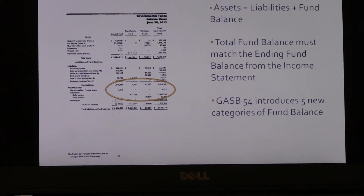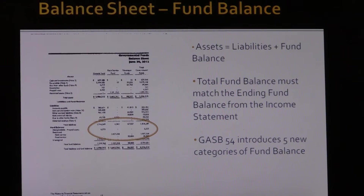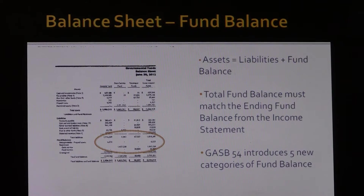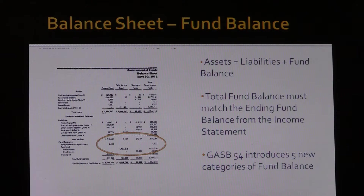This is an example of an annual audit of the combined governmental balance sheet. It shows all the assets, liabilities, and fund balance for each governmental fund that the academy operates. Fund balance is the difference between assets and liabilities, represented by the equation: assets equals liabilities plus fund balance. The total fund balance for each fund presented must match the ending fund balance from the statement of revenues, expenditures, and changes in fund balance from the previous slide. You can see how the fund balance in the circled area matches that.